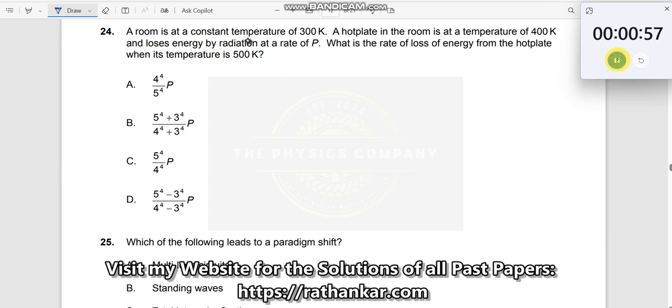Question number 24. A room is at a constant temperature of 300 Kelvin, T1 is given. A hot plate in this room is at a temperature of 400 Kelvin, T2 is given.